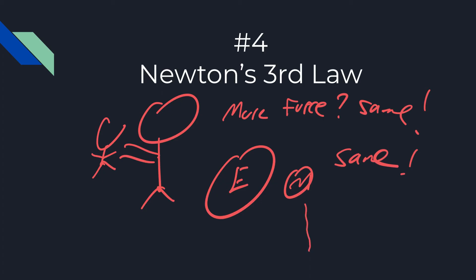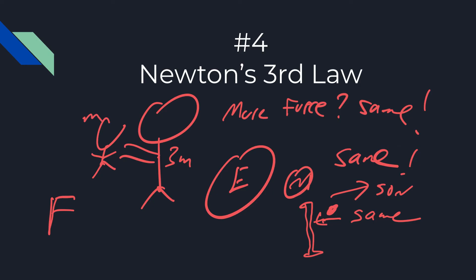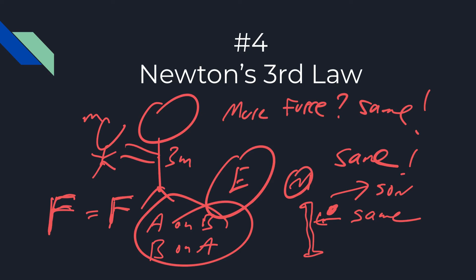Another example: a baseball bat hits a ball with 50 newtons — how hard does the ball hit the bat? The same. A lot of times they'll phrase it as: big guy pushes on little guy with force F, and big guy is three times the mass of little guy — what is the force? The answer is F. Not three F, not one-third F. When you see language asking how the force of A on B compares to the force of B on A, that should trigger you: it's a Newton's third law problem.